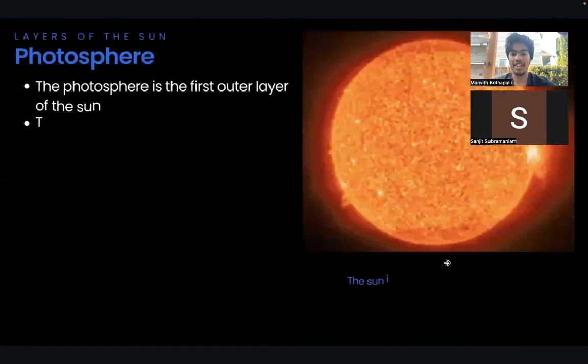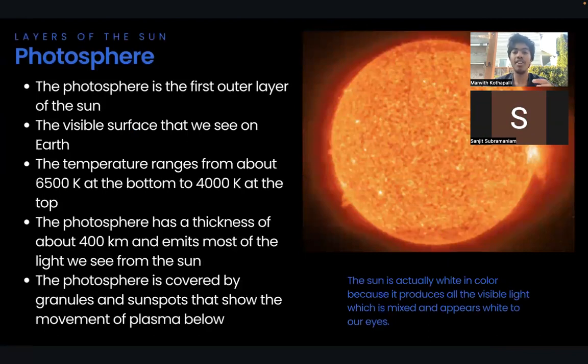Now let's talk about the next layer, the photosphere. The photosphere is the first outer layer of the Sun and the visible layer that we see from Earth. The temperature ranges from about 6,500 Kelvin at the bottom to 4,000 Kelvin at the top. The density is about 2 times 10 to the power of negative 4 grams per centimeter cubed.